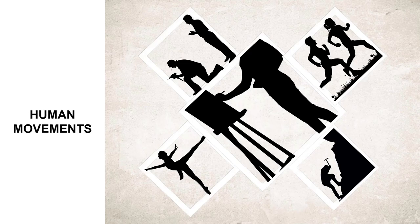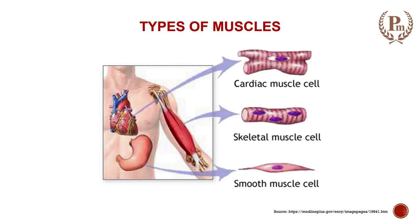We involve a huge number of different types of skeletal muscles, whether we are dancing, painting, writing, running, walking, or even talking. Coming to muscles, we have three types in our body: cardiac, skeletal, and smooth. Skeletal muscles are used for different movements as well as for maintenance of our posture.